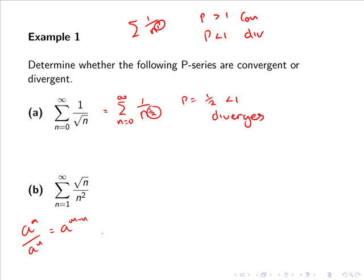If we take a power below the line, then that power becomes negative, i.e. a to the n equals 1 over a to the minus n. So we can rewrite this series as the sum from 1 to infinity of n to the half over n squared.